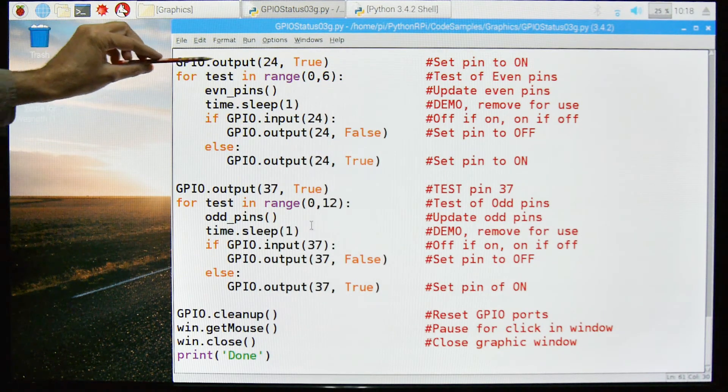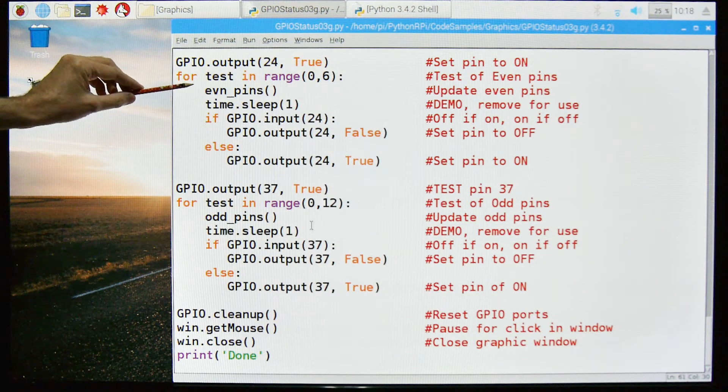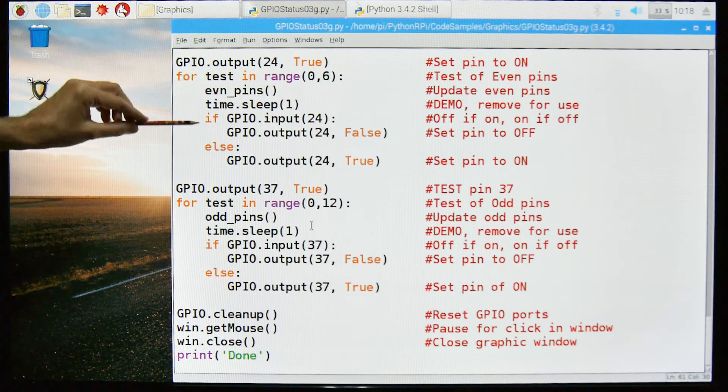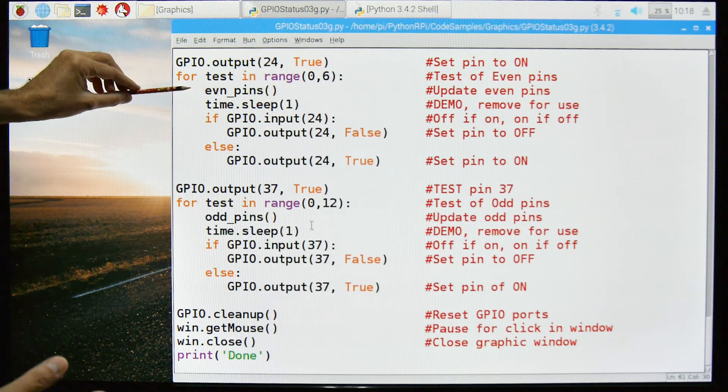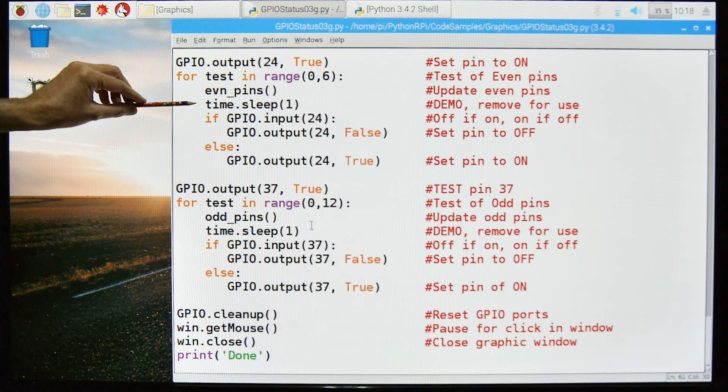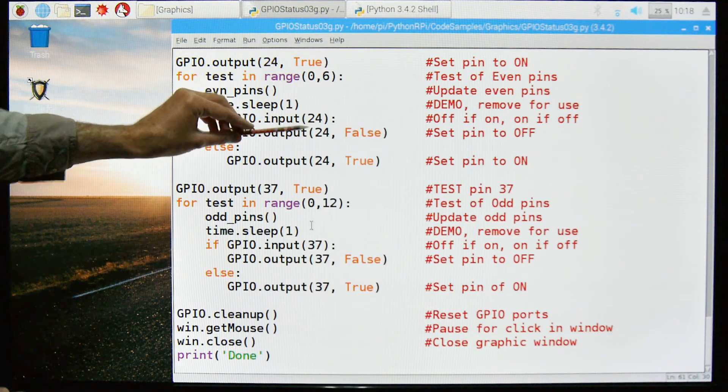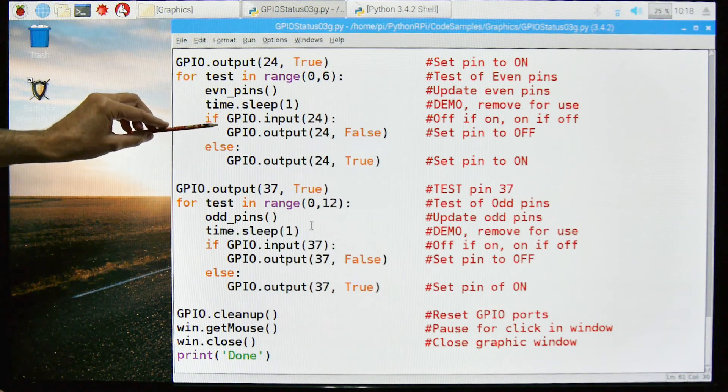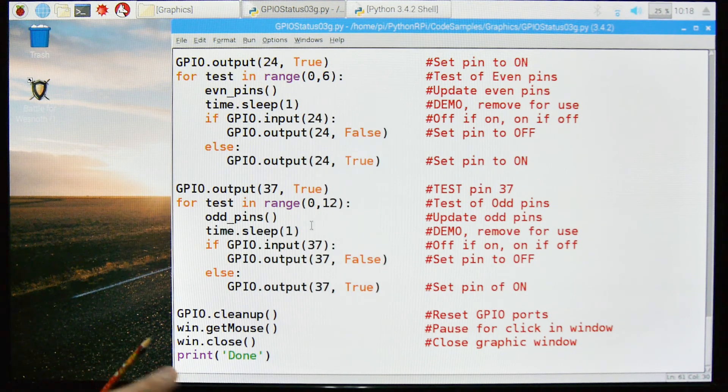So this first example, we're going to set pin 24 on to true, and then we're going to just run from 0 to 6, just run through this loop. This is the routine that will re-update our screen. We're going to sleep for one second so that we can see the results, otherwise it will fly by too fast. And then we're going to ask if the input of 24 is true, we're going to change it to false, otherwise if it's false we're going to change it to true. So in other words, we're just going to turn it on and off, on and off for this demo.